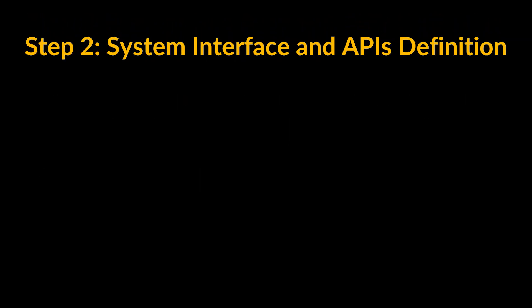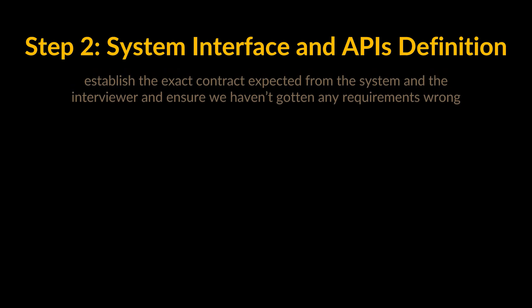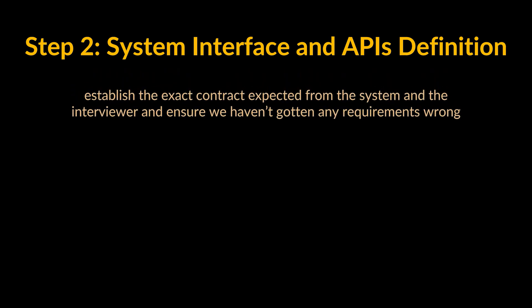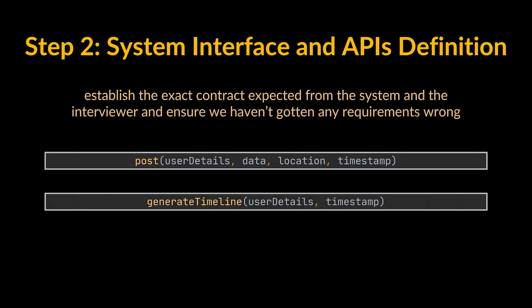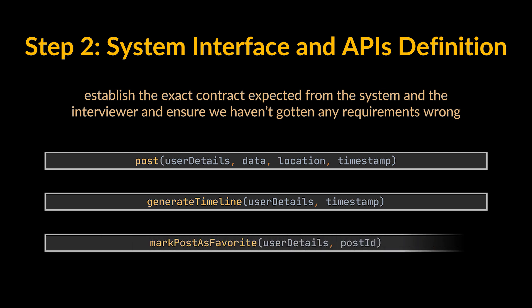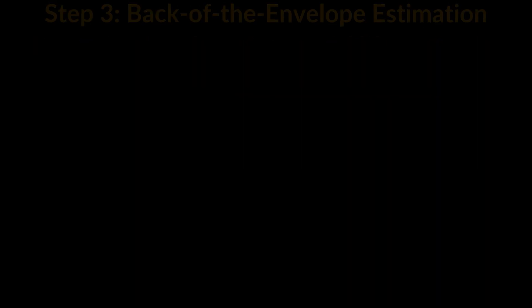Step two: system interface and API definition. Define what APIs are expected from the system. This will not only establish the exact contract expected from the system and the interviewer, but will also ensure we haven't gotten any requirements wrong. Some examples for our Instagram-like service: post a picture, which takes in a user, their details, the data, the location, the timestamp, etc.; generate a timeline, which takes the user, their details, the current time, etc.; and mark post as favorite, which takes the user and the post ID.